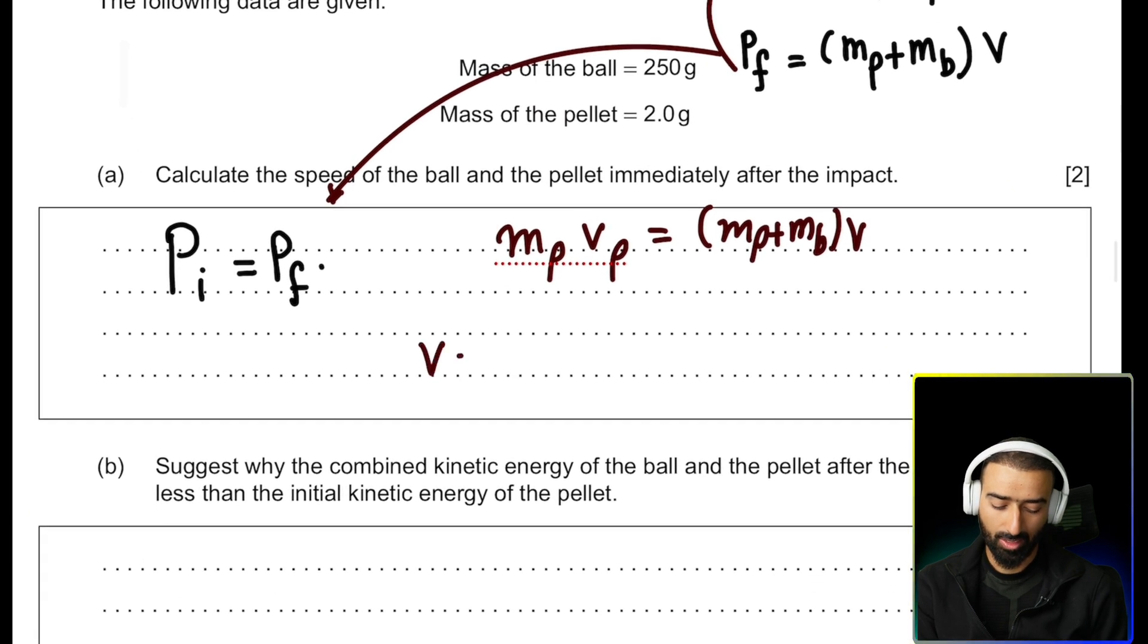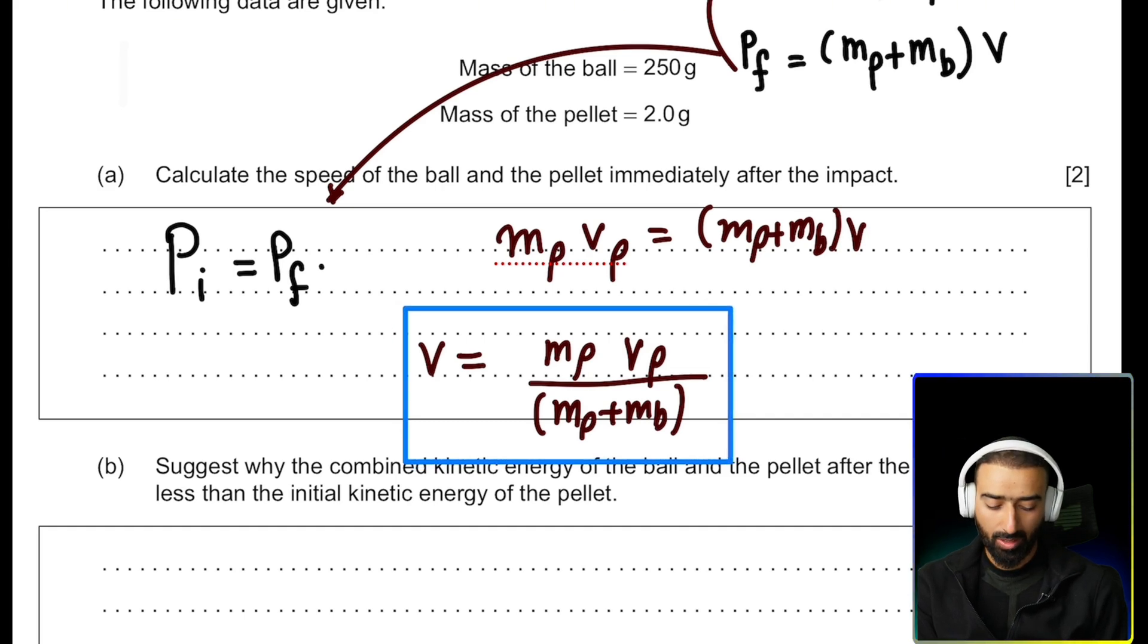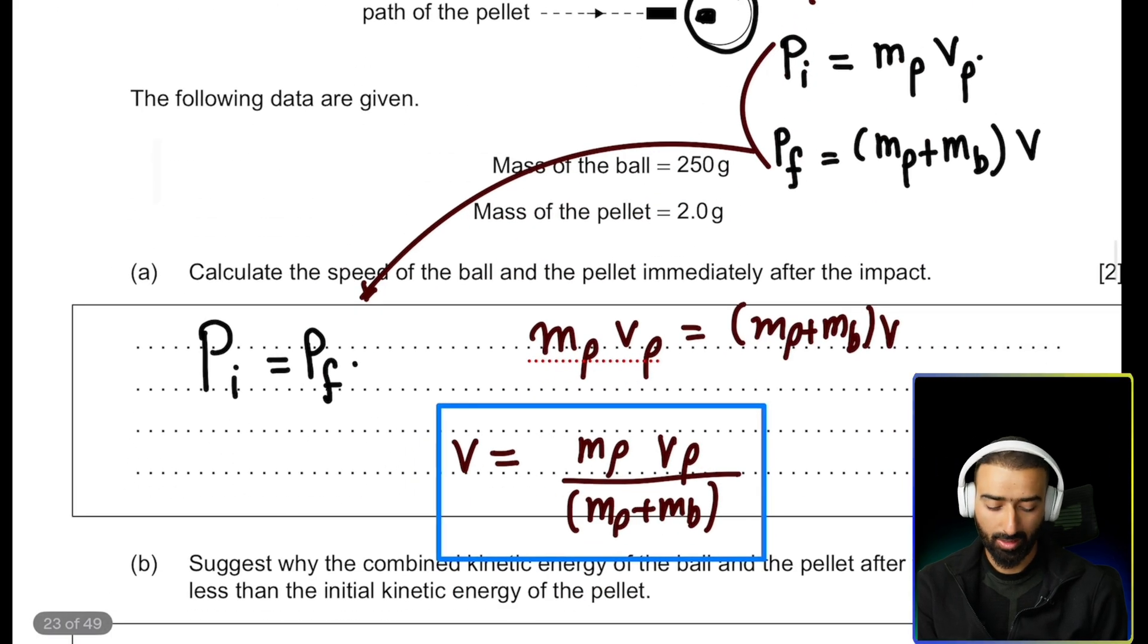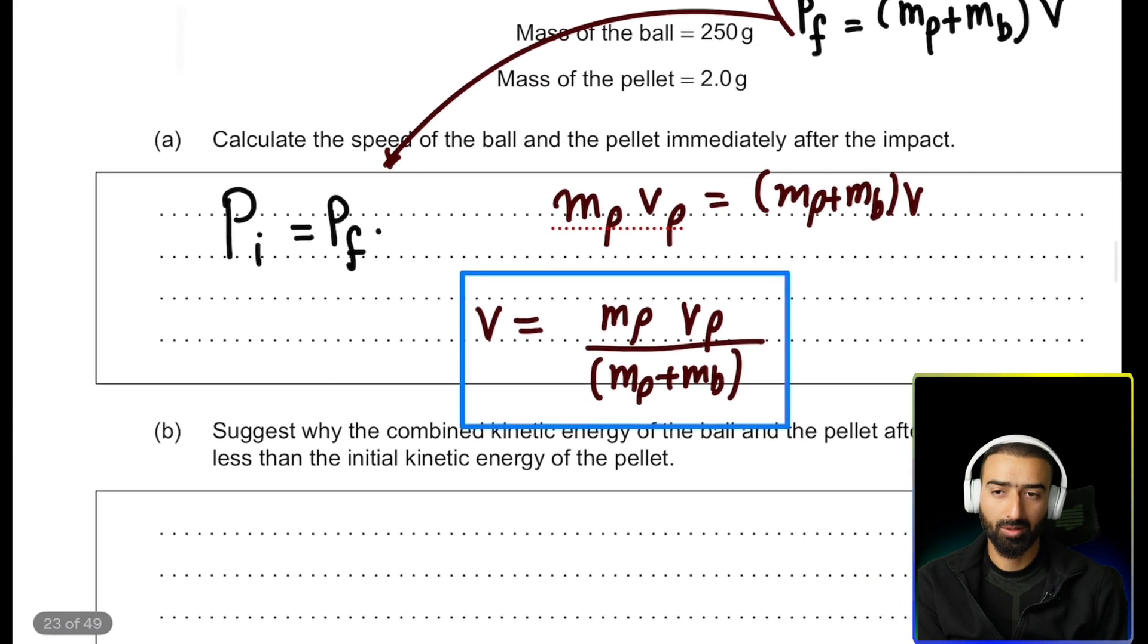Rearranging this equation, we get v equals mass of pellet, velocity of pellet divided by mp plus mb. And that solves the first problem. We now just have to substitute the masses and the velocity. Be careful though that the masses are given in grams and we need to convert it into kilograms. So we're going to divide it by 1,000 and then we are going to substitute here. I'll leave this substitution as an exercise for you to try.